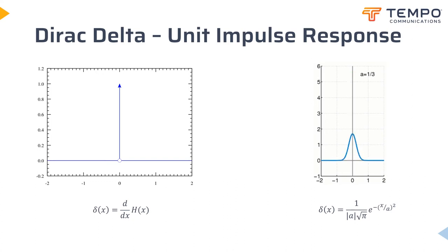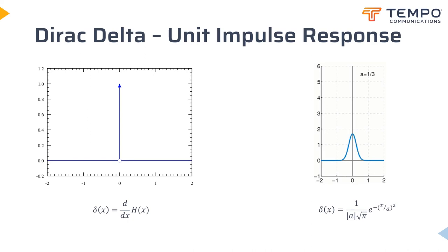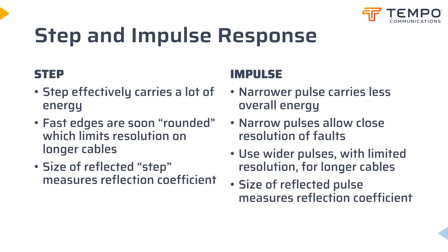Like the rise time of the step, the width and by implication the rise and fall time of the impulse dictates the maximum frequency contained in the energy transmitted into the line. The narrower the pulse, the finer the possible resolution of nearby faults, but the smaller the total energy sent to the line. A true impulse function has a value of zero everywhere except at zero where its value is one. In the real world, it's impossible to have a pulse width of zero. The unit impulse is the derivative of the Heaviside step. And the impulse response of any system is always the derivative of the step response, so the responses seen on the screen of a TDR are always interrelated.